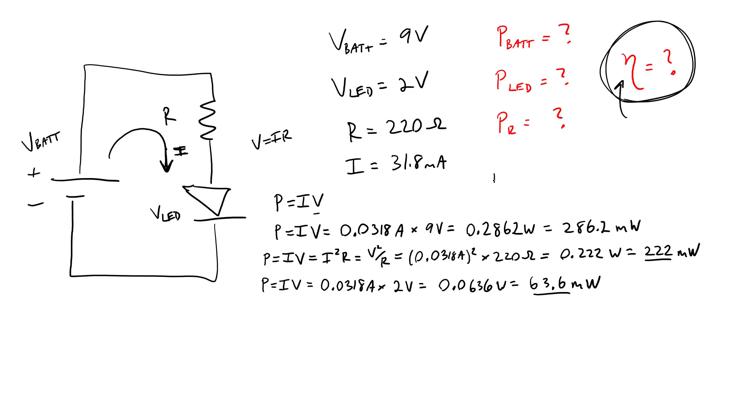Before we do that, I should also point out that you can apply conservation of energy here. So we know that the power supplied to the circuit by the battery has to equal the sum of the power delivered to the LED and the power delivered to the resistor. The power can't go anywhere else.